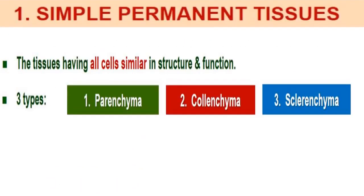Permanent tissues are of two types: simple permanent tissues and complex permanent tissues. In simple permanent tissues, all the cells are similar in their structure and function. Simple permanent tissues are of three types: parenchyma, colenchyma, and sclerenchyma. Let's start with parenchyma first.